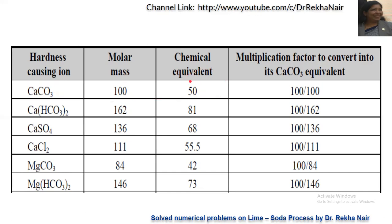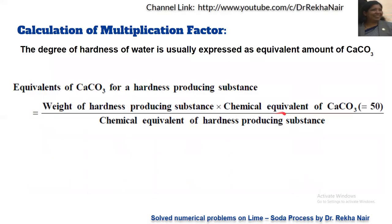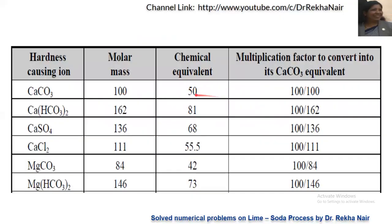The multiplication factor = chemical equivalent of CaCO₃ ÷ chemical equivalent of the hardness-producing substance. Here the hardness-producing substance is CaCO₃ itself, so chemical equivalent of CaCO₃ = 50 and equivalent weight of the substance = 50 as well. Therefore, multiplication factor = 50/50 = 100/100 = 1.